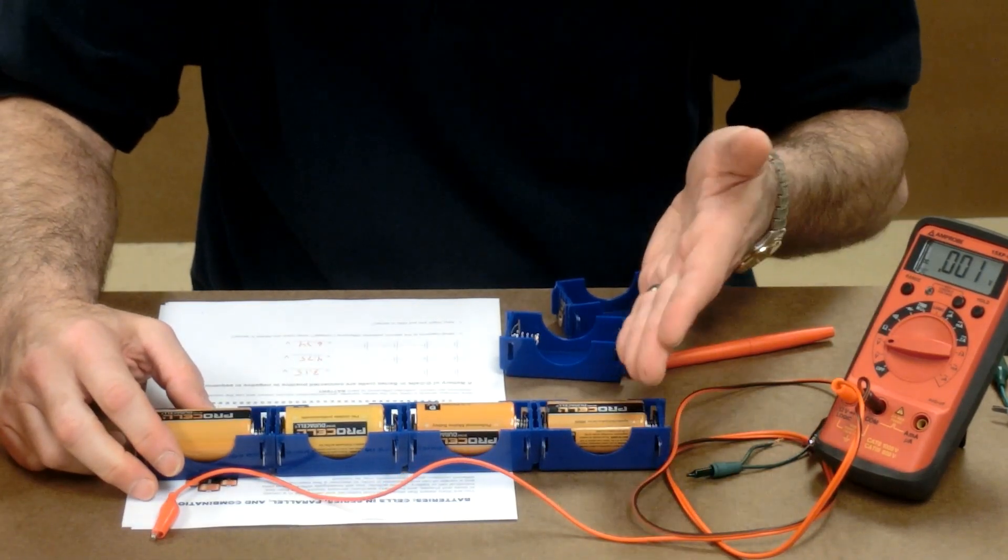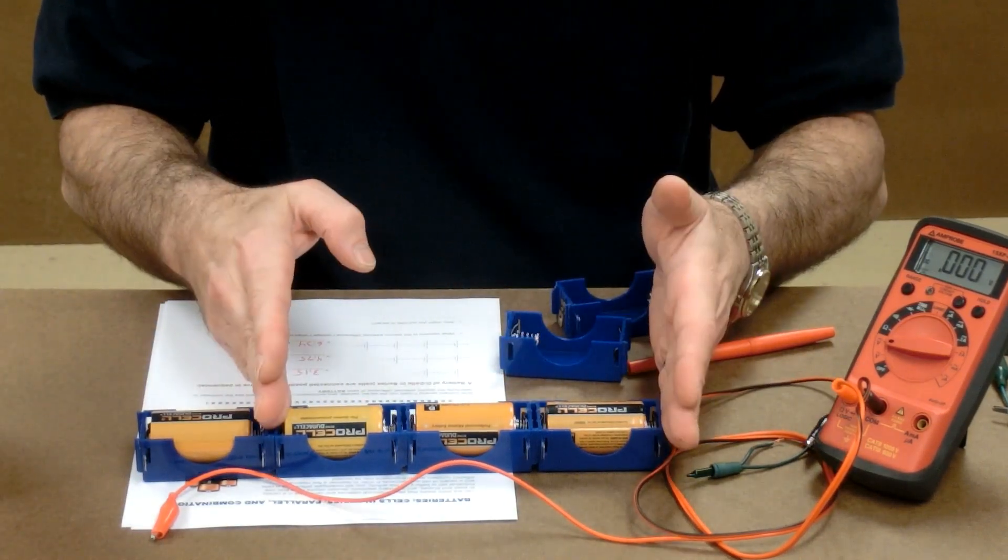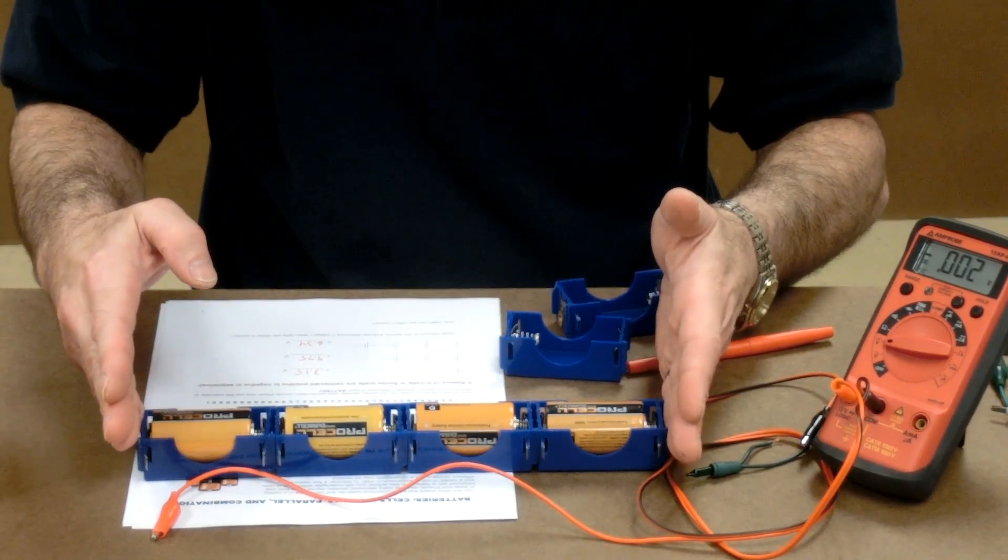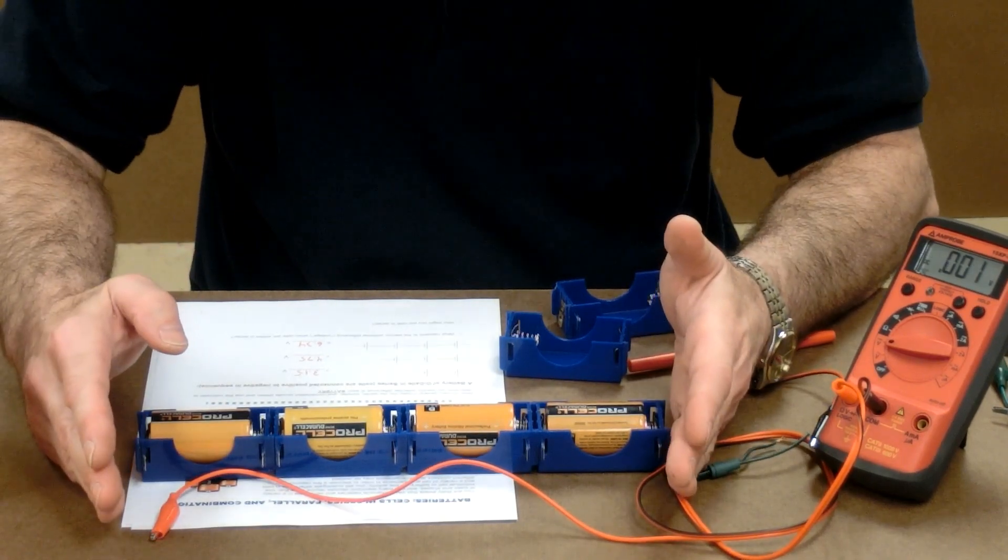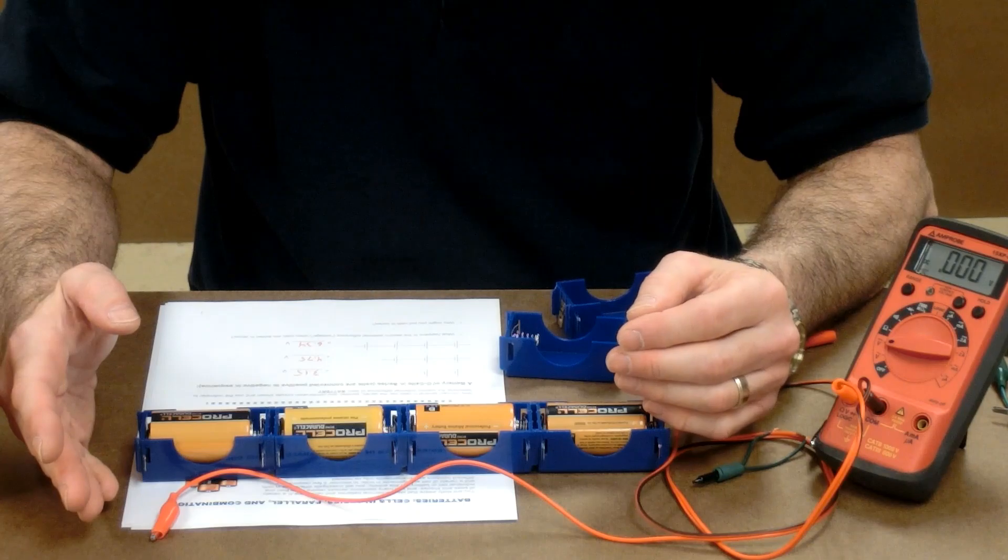If we were considering them to be 1.5 volts apiece, we'd have 1.5, 3, 4.5, and 6. So our values go along with that. So why would we put cells in series? We do it to increase the voltage.